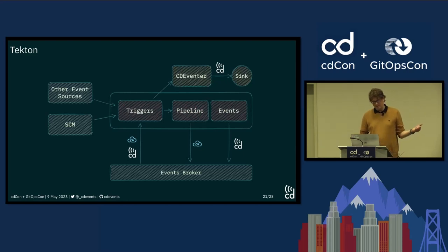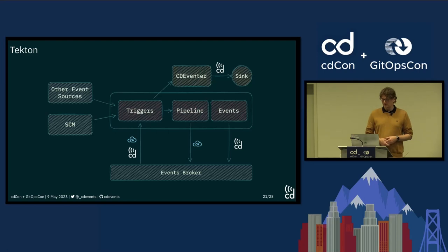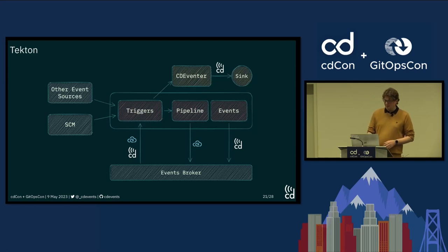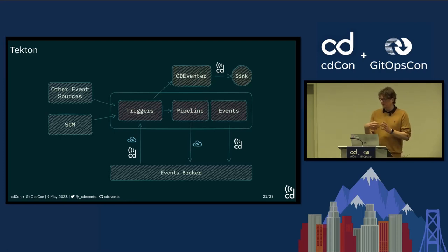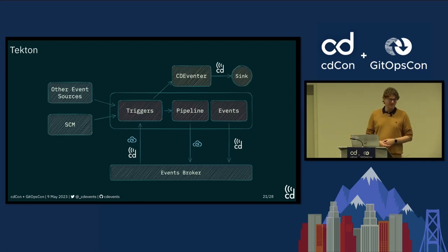For Tekton, it provides a component called Triggers that natively supports ingestion of cloud events — essentially any events that are JSON over HTTP, so it natively supports CD Events as well. The pipeline component from Tekton can also produce cloud events today. We have an experimental controller that can be run alongside the Tekton controller to produce CD Events specifically. I also built a toy project called CD Eventer that allows you to get incoming events from Triggers, extract information from that, and produce a CD Event as output — acting as an adapter layer to transform events from one format to another, which is useful for building POCs.